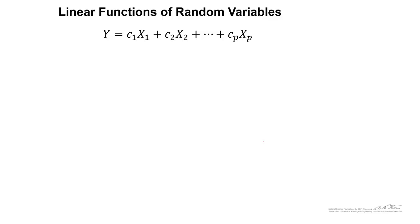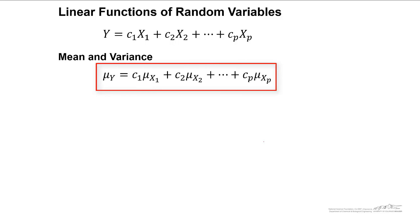In order to understand the analysis of sampling distributions, we have to first consider linear functions of random variables. If we had a variable y, that's a linear function, a linear combination of x1, x2, all the way up to xp, and we have these coefficients c1, c2, etc.